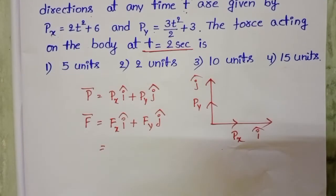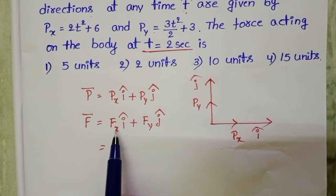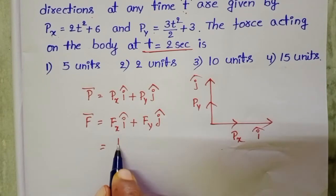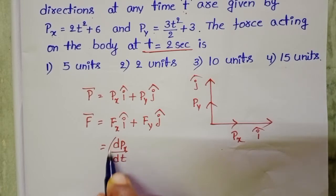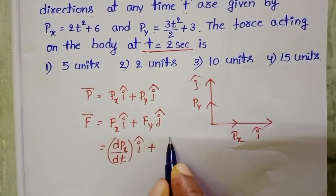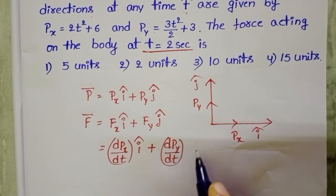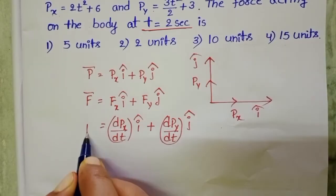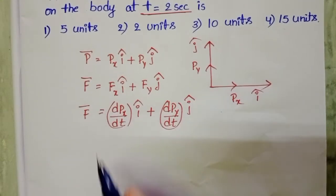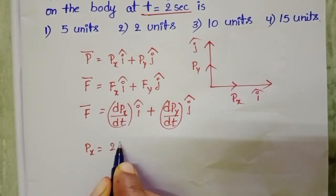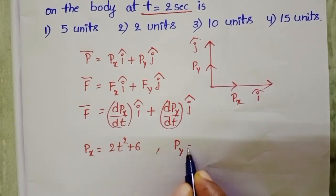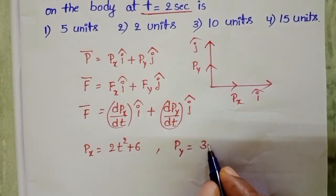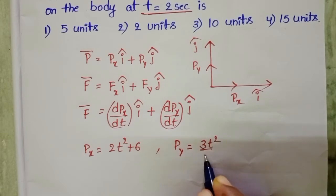Force F-bar equals Fx i-cap plus Fy j-cap. Force equals the rate of change of momentum, so Fx equals dPx/dt and Fy equals dPy/dt. Given: Px equals 2t squared plus 6, and Py equals 3t squared divided by 2 plus 3.